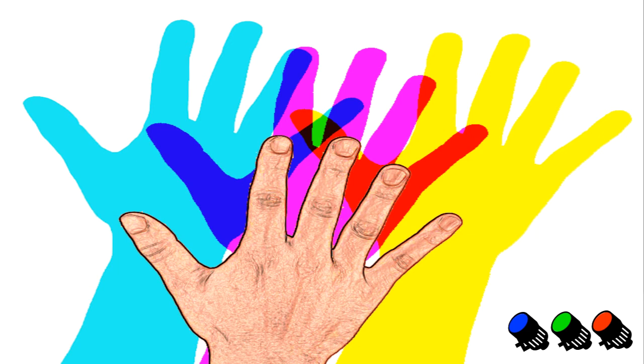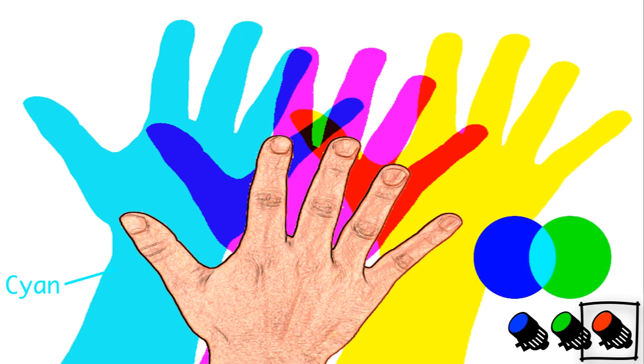Let's keep going and talk about this light blue color on the left of your screen called cyan. This is the place on the screen where my hand blocks only one color, red. And thus, I see a mixture of blue and green, which is cyan.